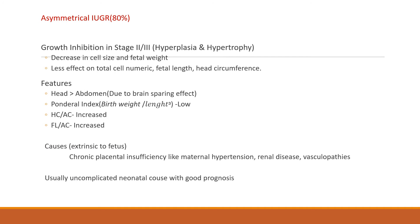In asymmetrical IUGR, growth inhibition occurs in stage 2 or stage 3, resulting in decrease in cell size and fetal weight, with less effect on total cell number, fetal length, and head circumference. Features include head circumference relatively larger compared to abdominal circumference due to the brain sparing effect, a low ponderal index, and increased HC/AC and FL/AC ratios. Causes are extrinsic to the fetus — mainly maternal causes like chronic placental insufficiency due to maternal hypertension, renal disease, and vasculopathies. The neonatal course is usually uncomplicated with good prognosis.